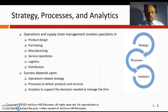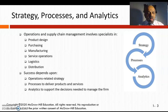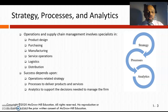Operations and supply chain management involves product design, purchasing, manufacturing, service operations, logistics, and distribution. For example, if you want to make a car, first you design it — that's product design. Then you determine what materials you need to purchase. The actual production of the cars is manufacturing, and once manufactured you need service locations and places where you can sell and maintain the car.